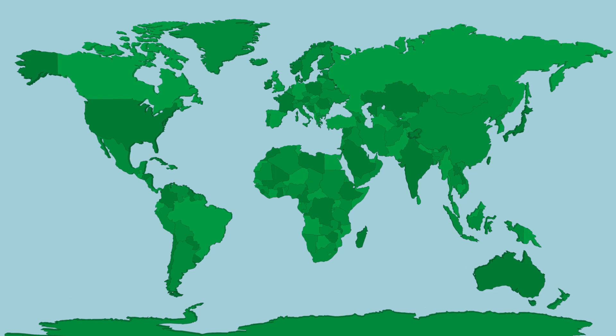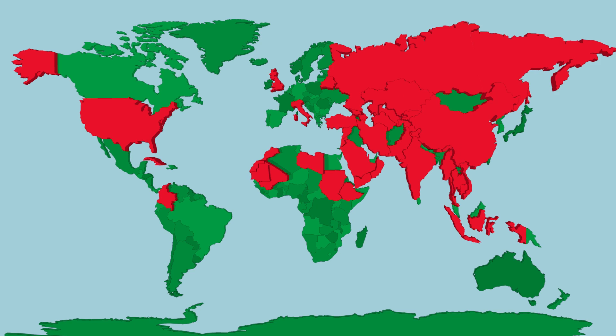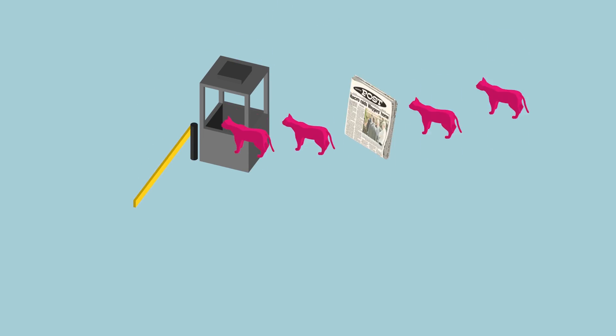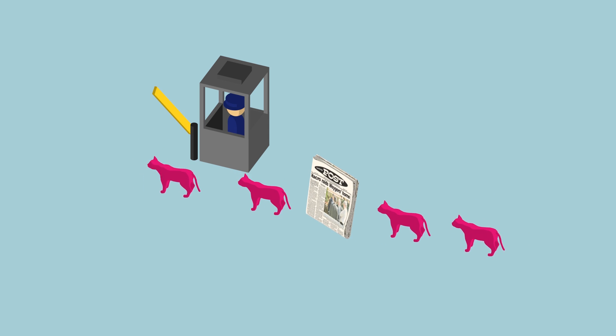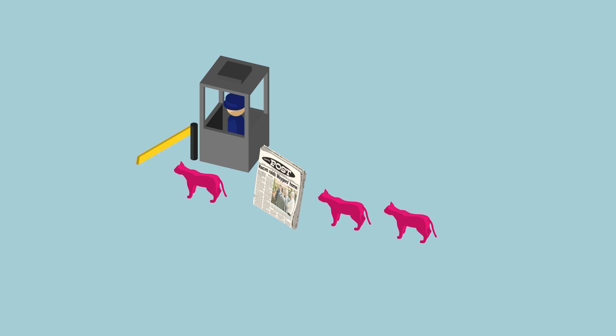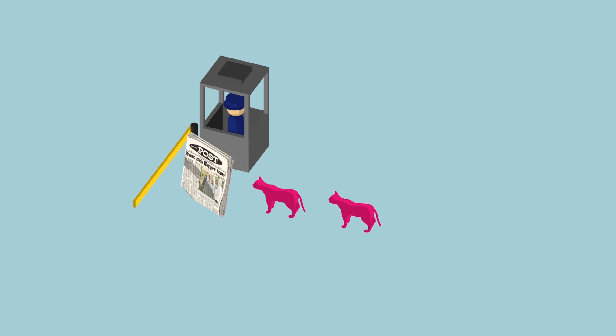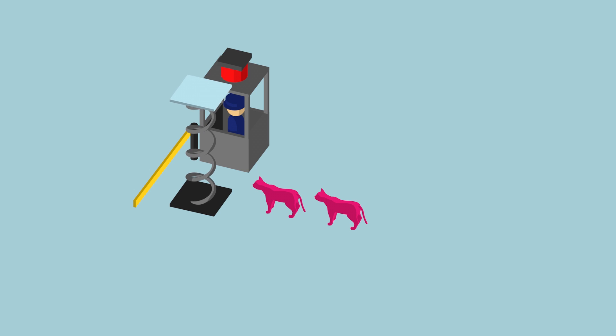Internet censorship is a worldwide phenomenon. As technology improves and we are able to process large amounts of data very quickly, many countries have begun to use these advances to selectively control or block the information their citizens or residents are allowed to access over the Internet.